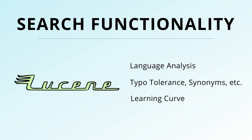Both technologies allow for implementing a variety of search features and provide extensive support for language analysis, typo tolerance, synonyms, and highlighting. But implementing each of these features requires a learning curve. It's also not easy to predict their impact on the overall search relevance.